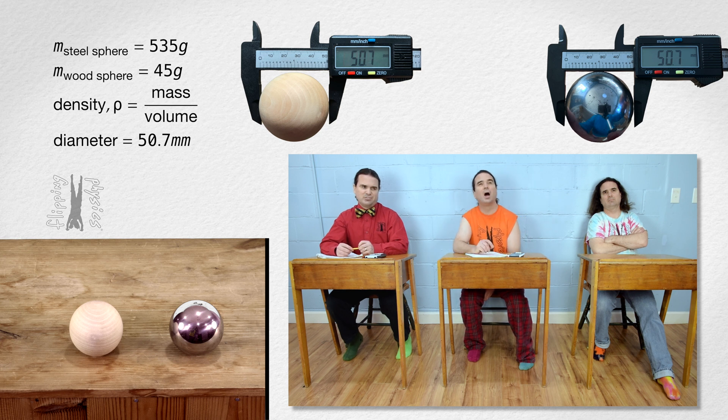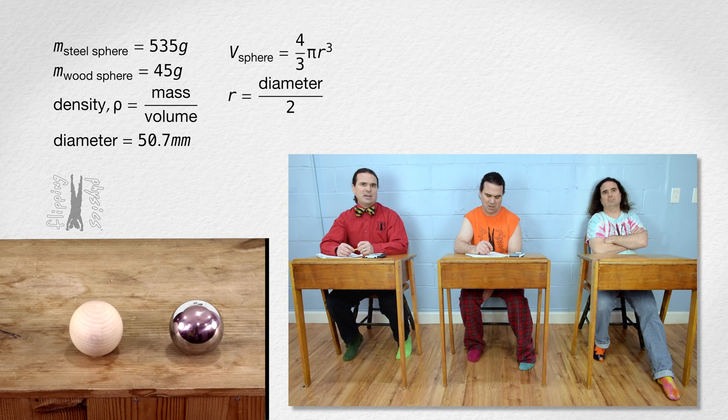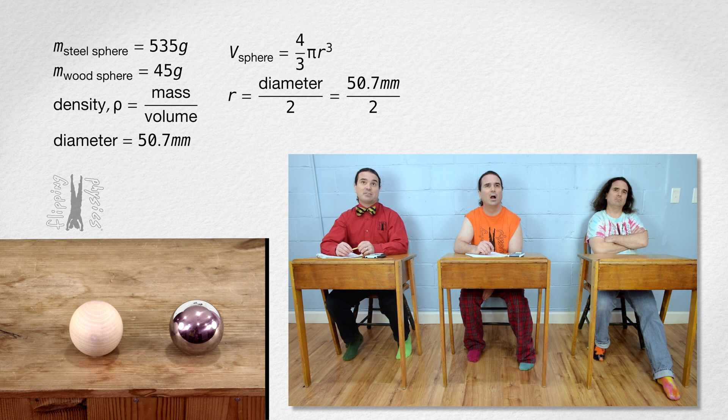The volume of a sphere equals 4 thirds pi times radius cubed, and radius equals diameter divided by 2, so the radius of both spheres is 50.7 millimeters divided by 2, or 25.35 millimeters.